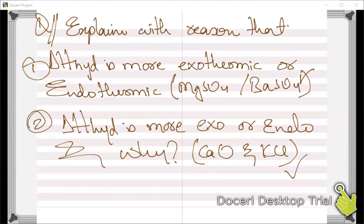We are done with another chapter — enthalpy change of solution. We covered lattice energy and the Born-Haber cycle, enthalpy change of solution, and next we will be starting entropy change. After that, only Gibbs free energy remains, and then chemical energetics will be complete. It's a good speed.